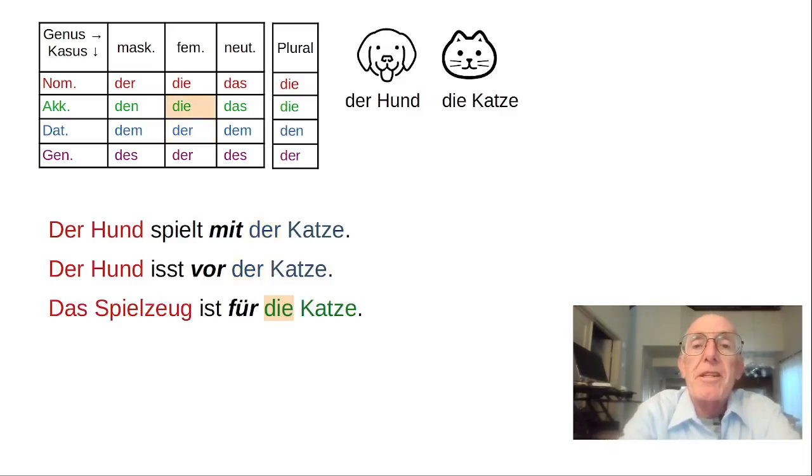Other prepositions take Akkusativ. For example, Das Spielzeug ist für die Katze. In this sentence, für takes the Akkusativ case for its noun.